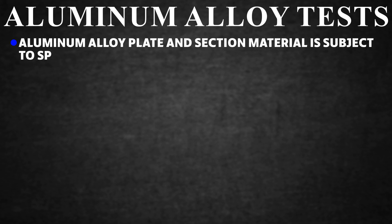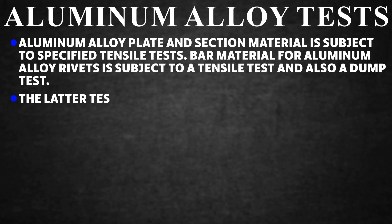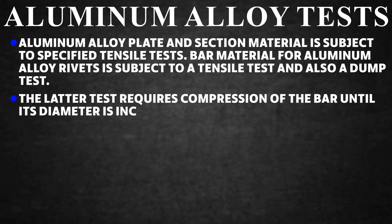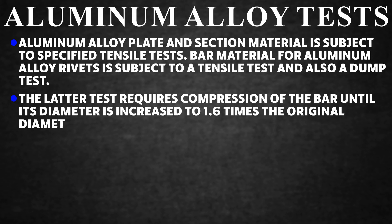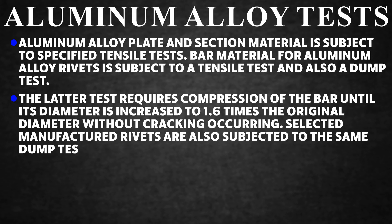Aluminium Alloy Tests. Aluminium alloy plate and section material is subject to specified tensile tests. Bar material for aluminium alloy rivets is subject to a tensile test and also a dump test — the latter requiring compression of the bar until its diameter is increased to 1.6 times the original diameter without cracking occurring. Selected manufactured rivets are also subjected to the same dump test.